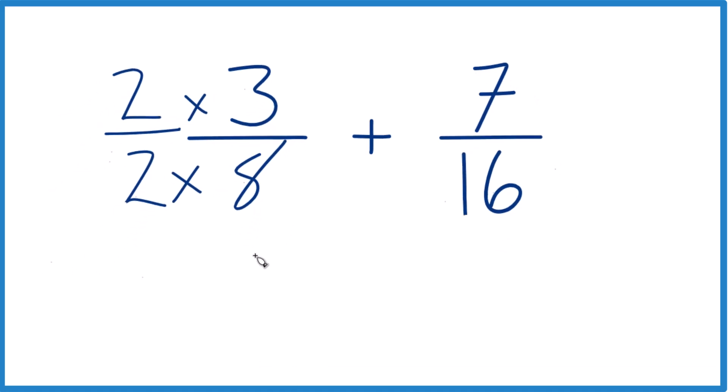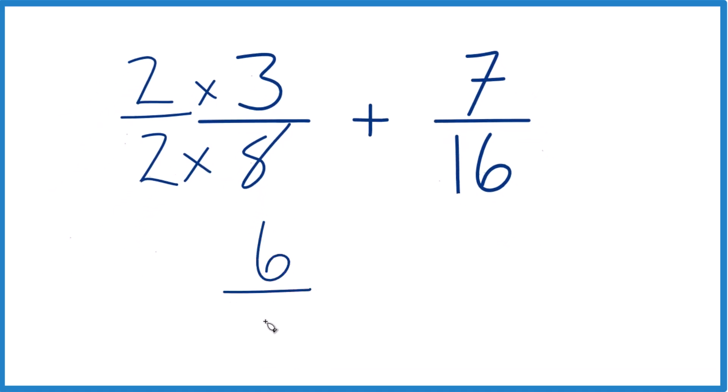But now we have two times three, that's six. Two times eight is 16. Six sixteenths, that's an equivalent fraction to three eighths. They have the same value, but we can add our seven sixteenths now here pretty easily.